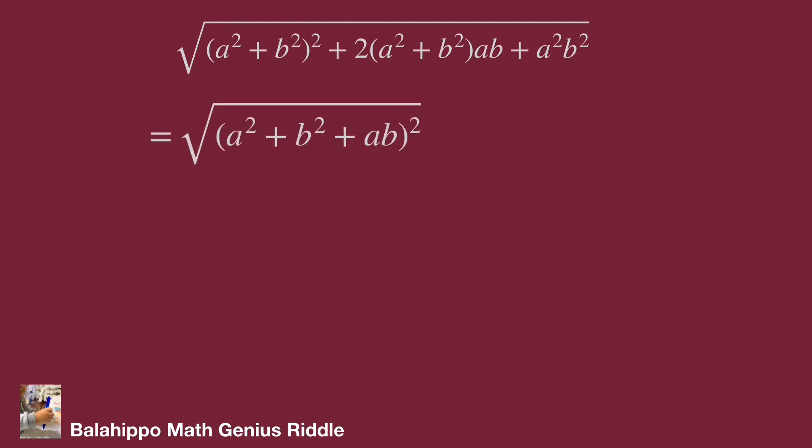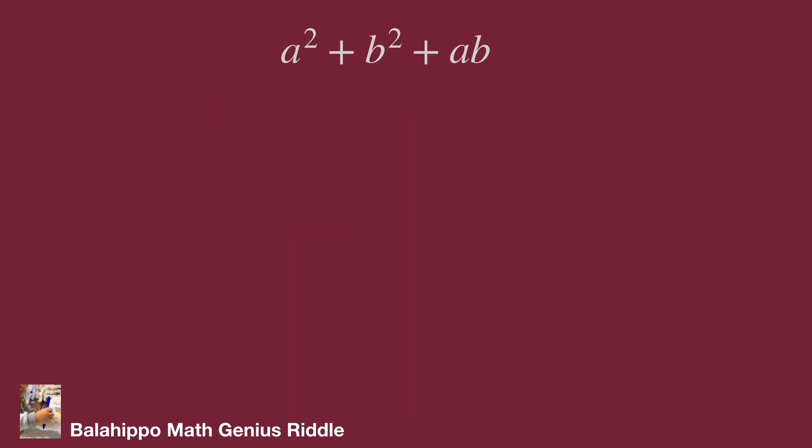The square root of (a^2 + b^2 + ab)^2 equals a^2 + b^2 + ab.